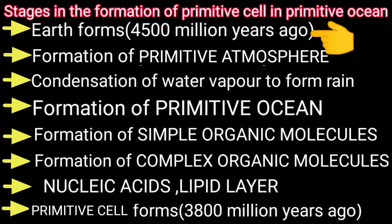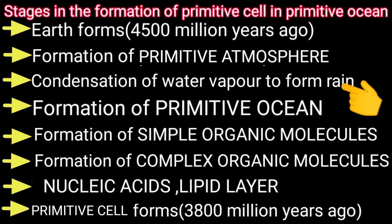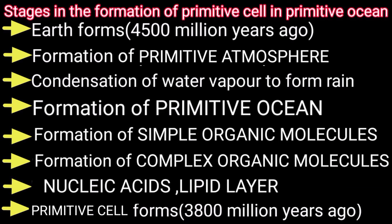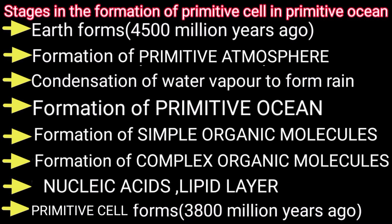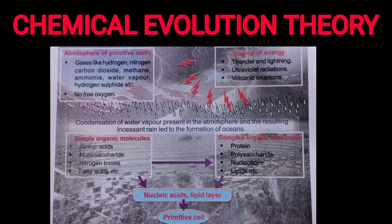About 4 to 5 billion years ago, earth was formed. First the atmosphere formed, then condensation of water vapor occurred, continuous rain led to the first ocean formation. Chemical changes produced simple organic molecules, which became complex organic molecules, then nucleic acids covered by a lipid layer, forming the first primitive cell.